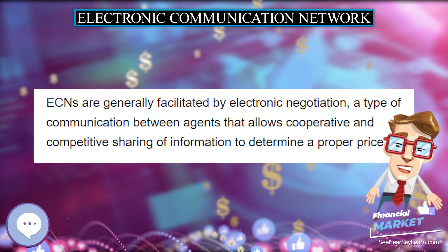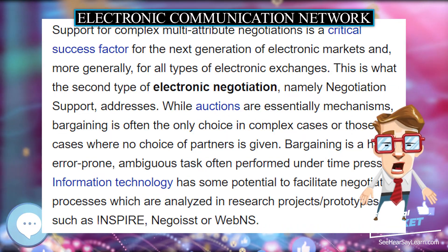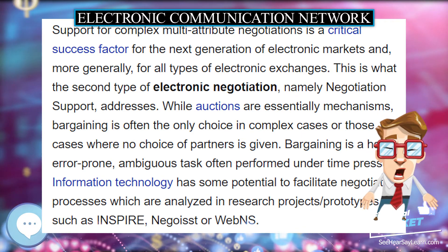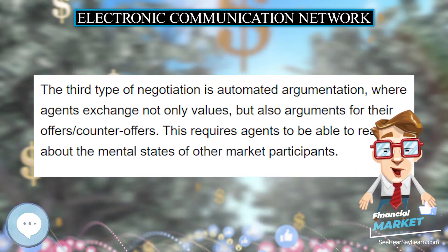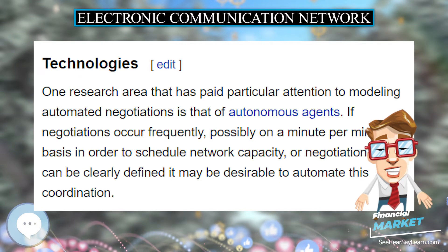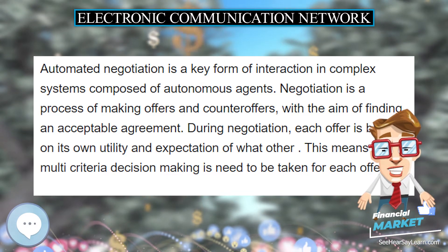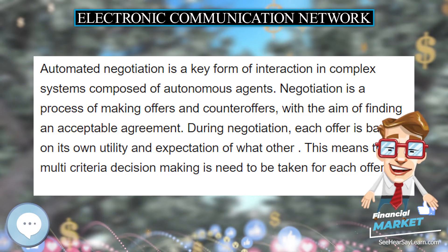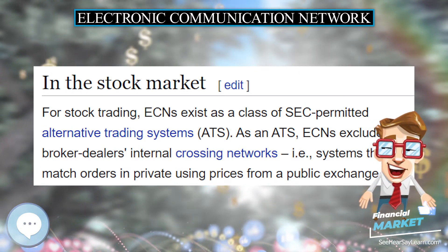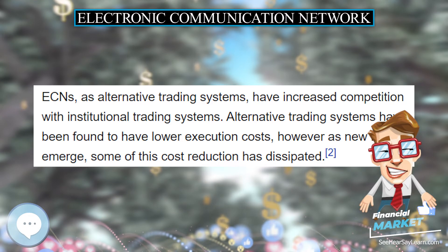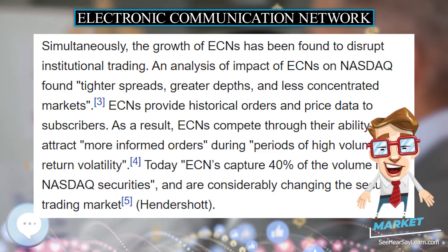In a classic structure, the ECN charges a small fee to all market participants using their network — both liquidity providers and removers. They can also attract volume to their networks by giving lower prices to large liquidity providers. Fees for ECNs operating under a classic structure range from $0.00 to $0.0015 or even higher depending on each ECN. This fee structure is more common on the NYSE; however, recently some ECNs have moved their NYSE operations into a credit structure.